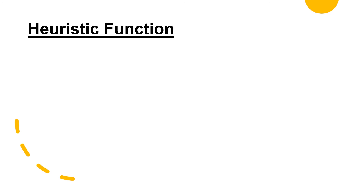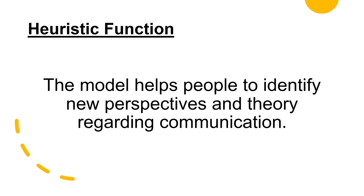Heuristic function: the model helps people to identify new perspectives and theory regarding communication. For example, like Berlo's SMCR communication model that has the source, the message, the channel, and the receiver — and we can see many different things like the hearing part, communication skills, the content, and the feedback. By just changing one of them, we can see how the result also changes, which is much easier to see when using a model.